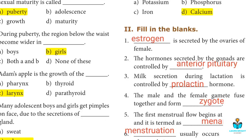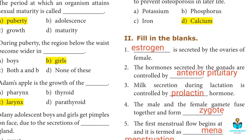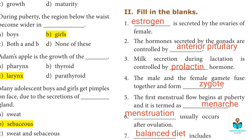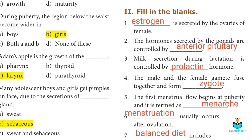Second section fill-in-the-blanks: The hormones secreted by the gonads are controlled by the anterior pituitary. Third: Milk secretion during lactation is controlled by prolactin hormone.